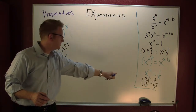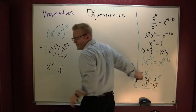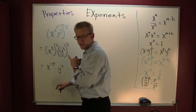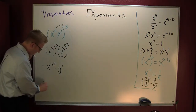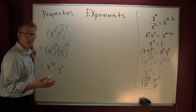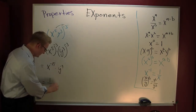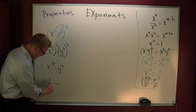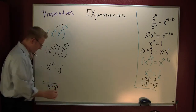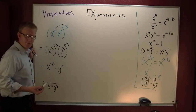Now I'm going to use this property: it's raised to a negative power, so I'm going to drop it down to the denominator. If you've got a negative in the exponent, it's in the wrong spot. So it moves down: x to the fifteen and y to the nine — each one of those minus signs is now a plus sign.